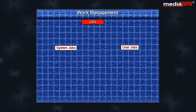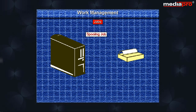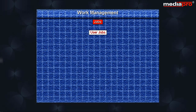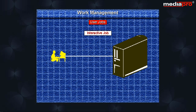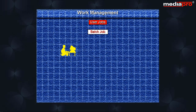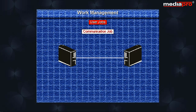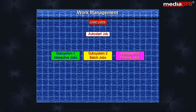An example of a system job is the spooling job. Spooling jobs are created by the system and are print programs used to print spooled output. User jobs can be classified as interactive jobs, batch jobs, autostart jobs, and communication jobs. An interactive job includes all the work done at a workstation from where a user signs on until he signs off. A batch job is run by submitting a request for running programs that do not require user interaction. A communication job is one that is started as a result of a request from another AS-400 system. An autostart job is one that is started automatically when a subsystem is started.